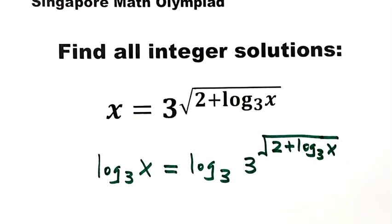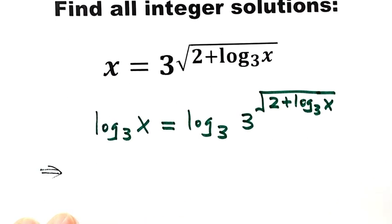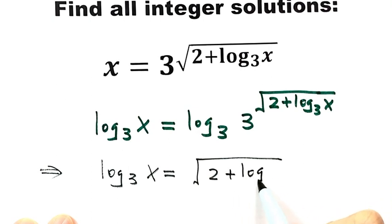Based on the property of logarithms, the right hand side simplifies. These two cancel, so it just equals this part. Then we have log base 3 of x equals square root of 2 plus log base 3 of x.